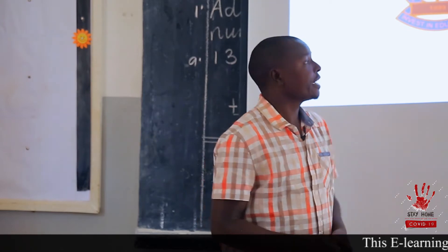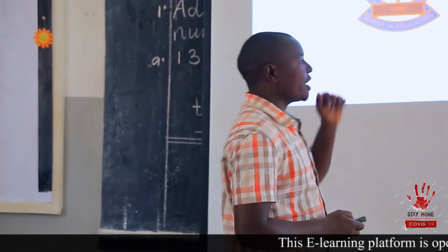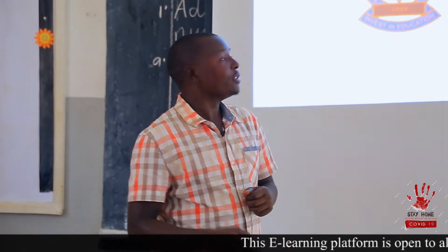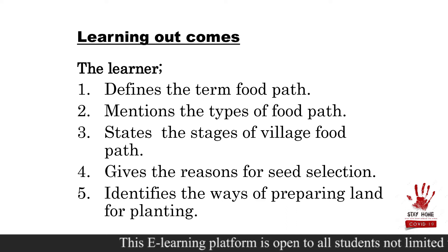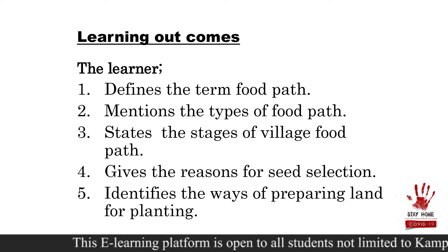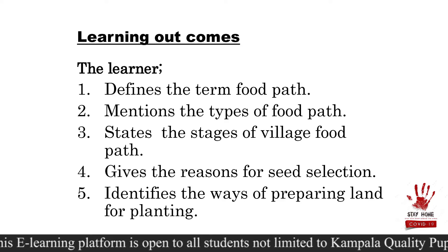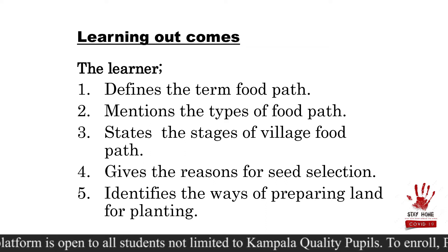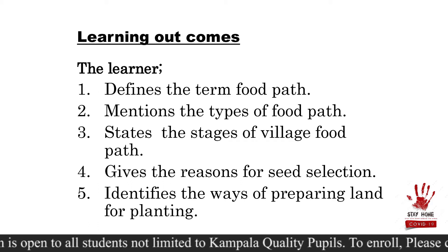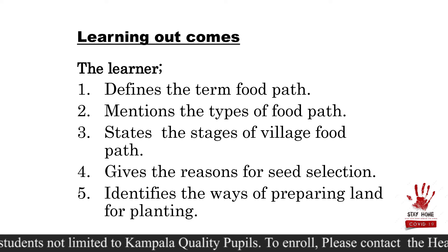When we talk about crop growing, it is quite a wide topic. But allow me to only talk about food path today. What are we going to learn about? By the end of this lesson, you should be able to: one, define the term food path; two, mention the types of food path; three, state the stages of village food path; four, give the reasons why people carry out seed selection; and five, tell the ways of preparing the land for crop growing.